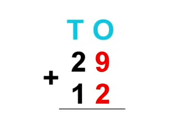First you have to add the ones column. 9 plus 2, which equals 11. You carry the tens into the tens column.